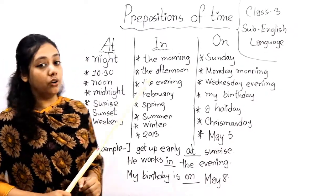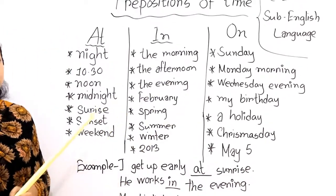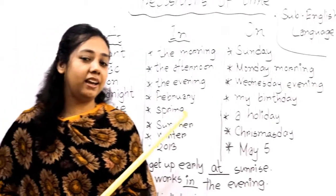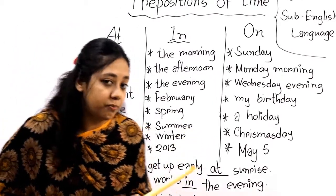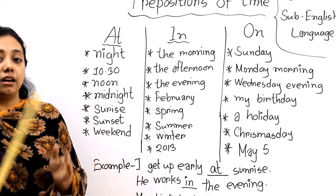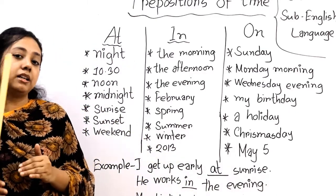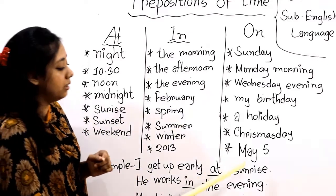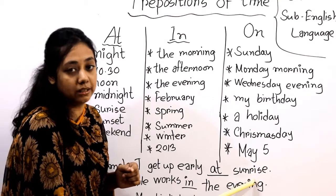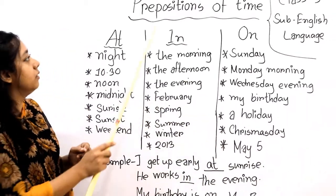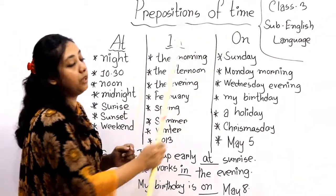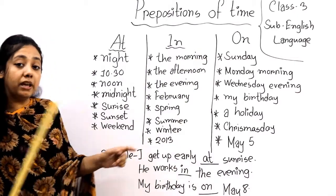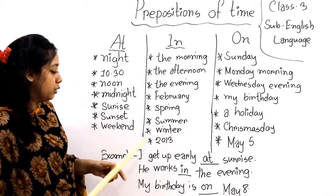Can you tell me what is the preposition of place? Prepositions of place indicate a specific place and make the relationship between a noun or pronoun to another noun or pronoun in the sentence. Similarly, prepositions of time indicate a specific time and make the relationship between two nouns or pronouns in a sentence.